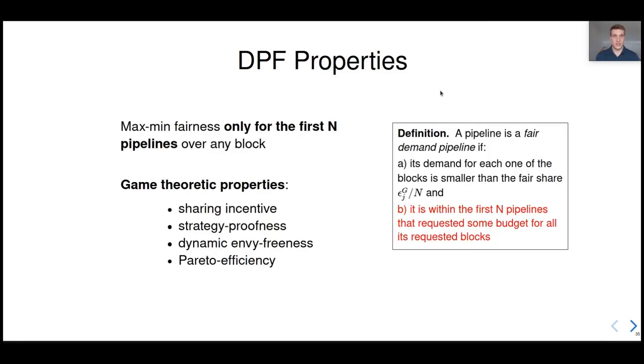And that's how we can guarantee maxmin fairness, but only for the first n pipelines. On the right, you can see that we have to modify the definition of fair demand pipeline a bit, to account for the fact that privacy is not replenishable. And finally, with this change, we can guarantee similar properties as DRF.